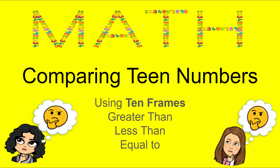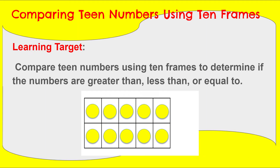Hi boys and girls, we're back to comparing teen numbers. Yesterday we were using a picture strategy to compare those teen numbers, and today the strategy we're going to use is 10 frames. We're going to look at groups of numbers inside 10 frames and decide if they are greater than, less than, or equal to. Our learning target is to compare teen numbers using 10 frames. And here's a picture of a 10 frame because that's the strategy we will be using.